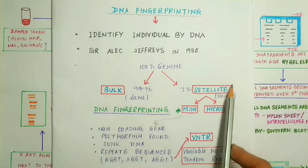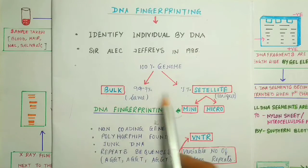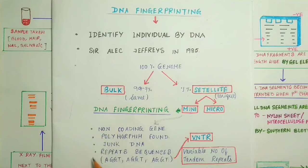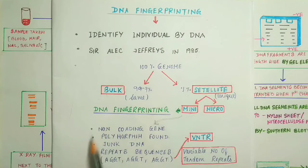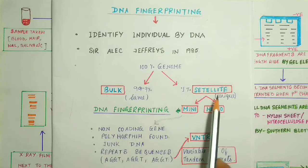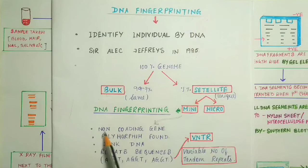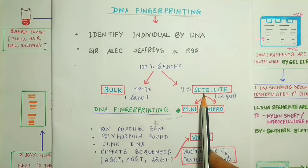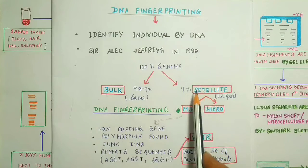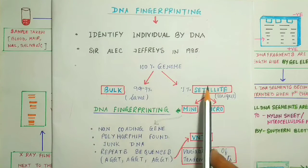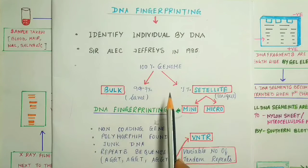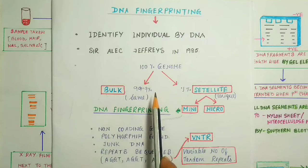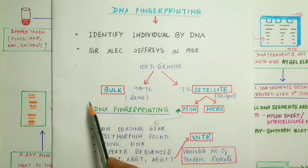Bulk DNA and satellite DNA are different from each other. These are the unique characteristics found in satellite DNA. The first point is that they are non-coding genes, meaning this satellite DNA cannot take part in the process of protein synthesis. Proteins are synthesized by DNA through transcription and translation. In the process of protein synthesis, only bulk DNA can take part.